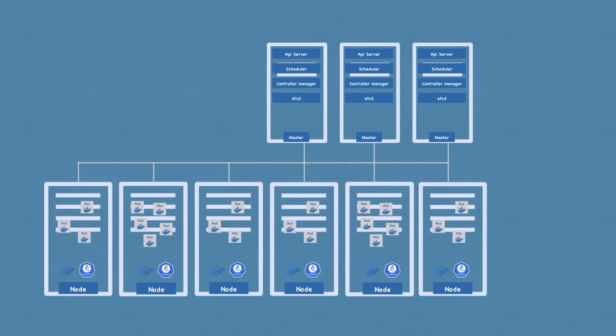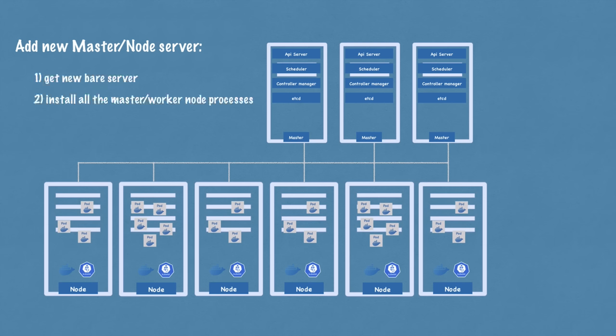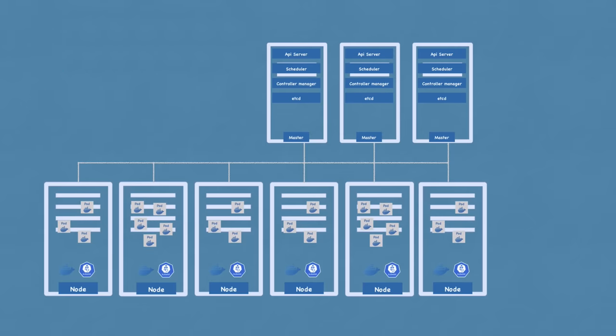In an existing Kubernetes cluster, you can add new master or node servers pretty easily. If you want to add a master server, you get a new bare server, install all the master processes on it, and add it to the Kubernetes cluster. Same way if you need worker nodes — get bare servers, install all the worker node processes like container runtime, kubelet and kube proxy, and add them to the cluster. This way you can infinitely increase the power and resources of your Kubernetes cluster as your application complexity and resource demand increases.